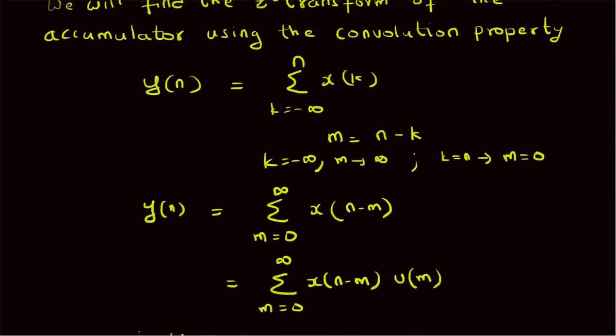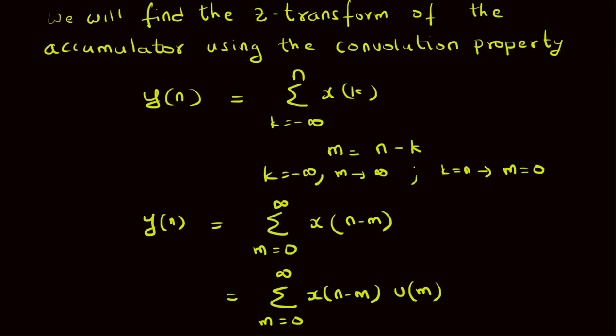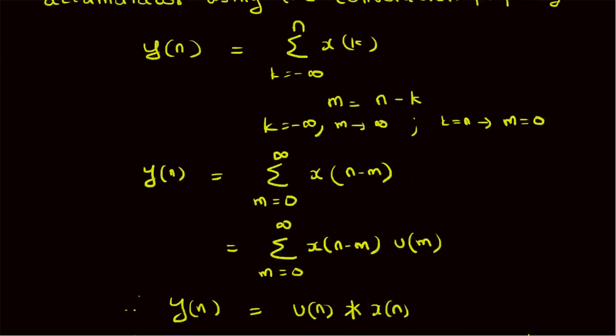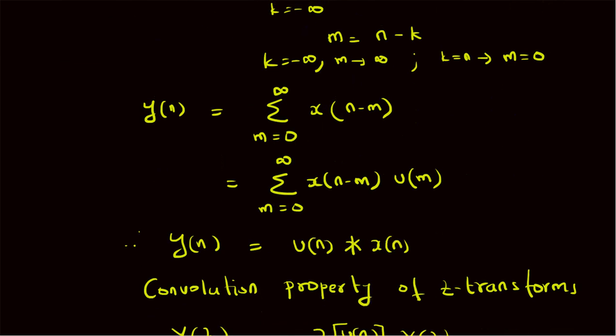To summarize, we have derived the Z-transform of the accumulator using the convolution property — expressing the Z-transform of the output in terms of the Z-transform of the input. The derivation starts with the system equation of the accumulator, then uses a change of variables to rewrite the sum as summation m = 0 to infinity of x(n - m). Since the summation is from 0 to infinity, we can include u(m) because it equals 1 for m from 0 to infinity.